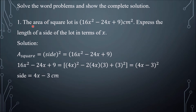Number 1: the area of a square lot is 16x squared minus 24x plus 9 cm squared. Express the length of a side of the lot in terms of x.